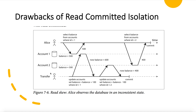Let's understand with this example. Suppose that Alice has two accounts — account one and account two — and each of them has a balance of 500. Alice wants to transfer 100 rupees from one account to another. Let's see how she observes an inconsistent state of the database during that transfer.